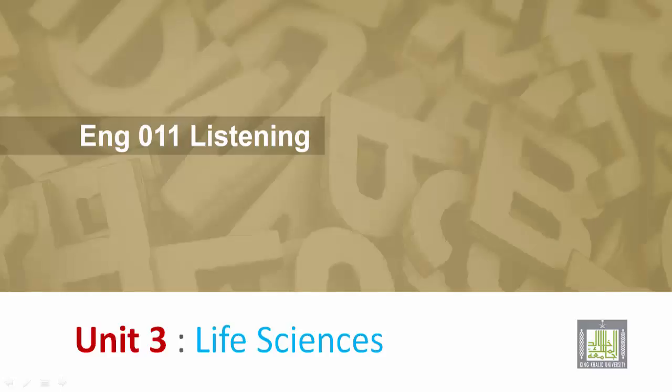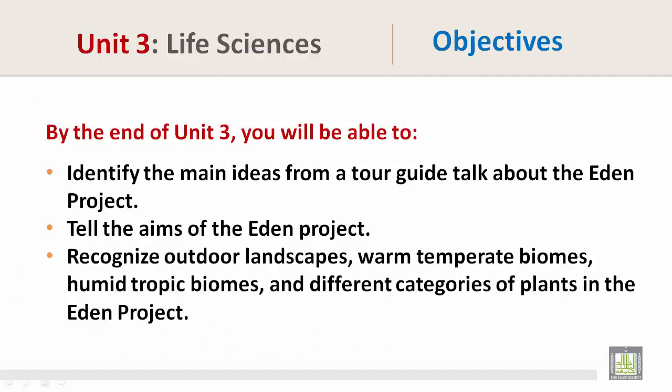English 011 Listening Unit 3: Life Sciences. Unit 3 Life Sciences Objectives. By the end of Unit 3 you will be able to identify the main ideas from a tour guide talk about the Eden Project, tell the aims of the Eden Project, recognize outdoor landscapes, warm temperate biomes, and humid tropic biomes, and different categories of plants in the Eden Project.